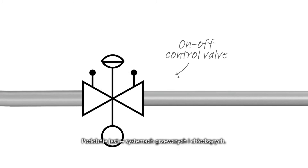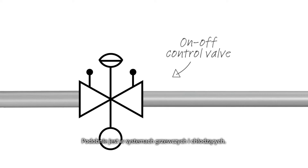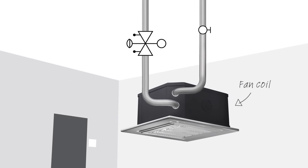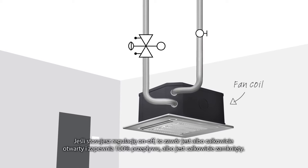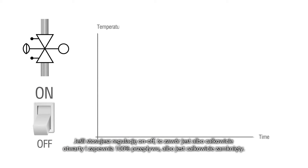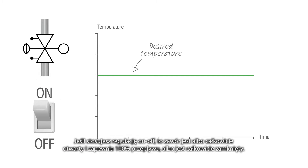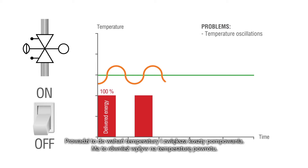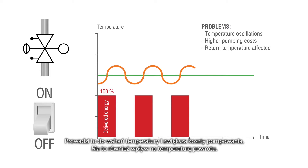Similarly in heating and cooling systems, if you use on-off control, the valve is either fully open and delivers 100% flow, or fully shut. This leads to temperature oscillations and higher pumping costs, and the return temperature is also affected.